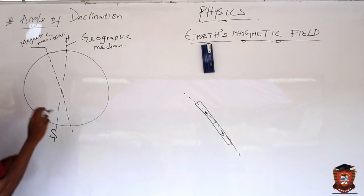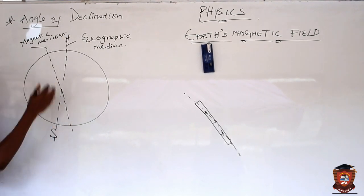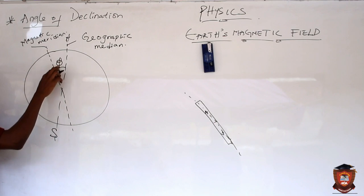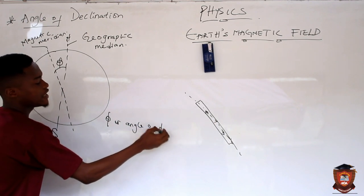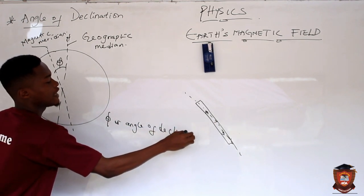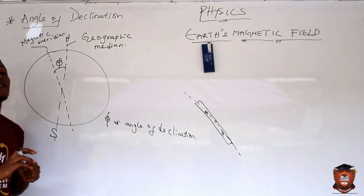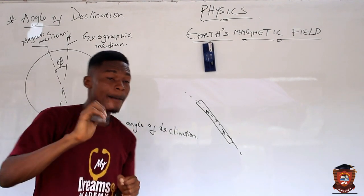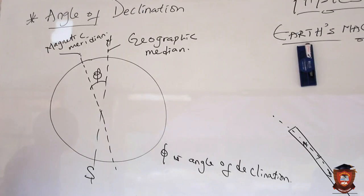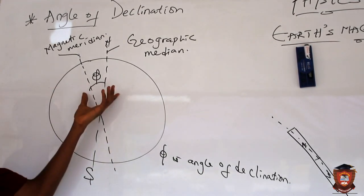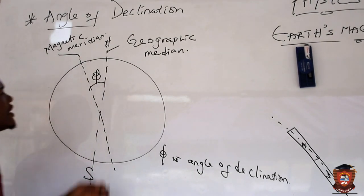So the angle of declination of a place is the angle between the geographic meridian and the magnetic meridian. If I represent that angle by phi, then phi is the angle of declination. This angle is very important in many aspects — remember that the angle of declination is the angle between the geographic meridian and the magnetic meridian.